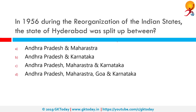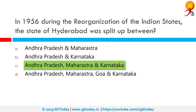In 1956, during reorganization of Indian states, the state of Hyderabad was split up between Andhra Pradesh, Maharashtra, and Karnataka. All these states received a part of what was then known as Hyderabad. The States Reorganization of 1956 is an important term to remember — that is when the geographical area of Hyderabad as it existed then was divided among these states.